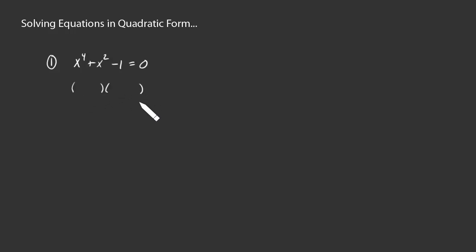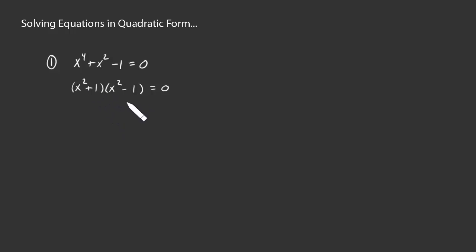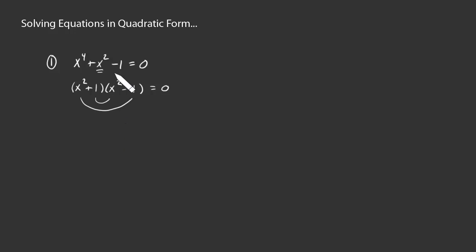Let's say we try to factor into the product of two binomials — maybe x squared times x squared. To get the constant term, we'd need one positive and one negative, but that's not going to work out: the inner and outer products added together don't give us x squared. We could try other possibilities, perhaps x and x cubed, but this does not break nicely into factors in any obvious way.